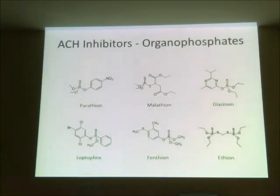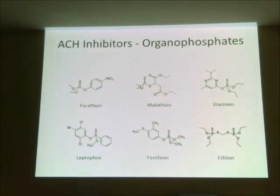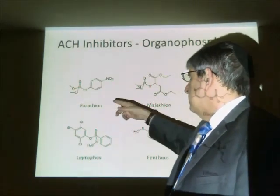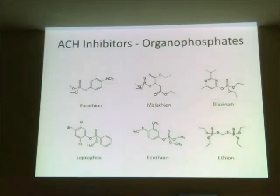Unfortunately, the organophosphates are not entirely safe. If they just had oxygen instead of sulfur, these compounds would be much more toxic to insects but also very toxic to human beings. There have been cases of people being poisoned by parathion — people have died from it when getting too much on themselves while spraying. Malathion is supposed to be somewhat less toxic. These compounds, while pretty good insecticides, are also quite dangerous.